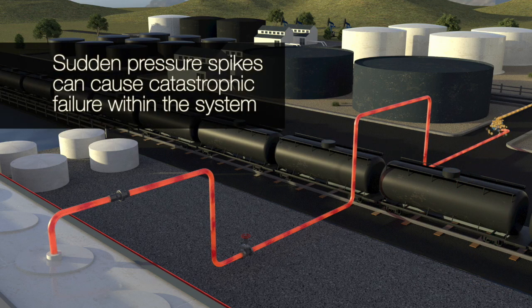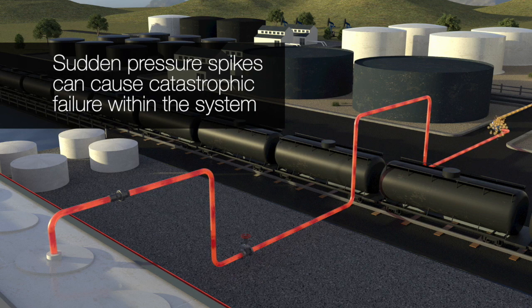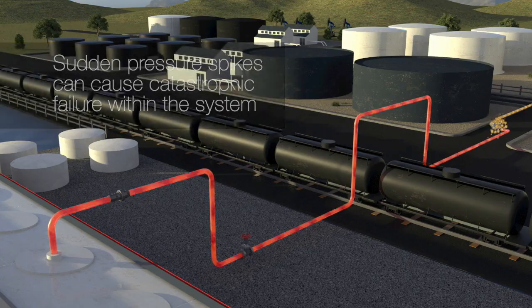The sudden pressure spike is enough to cause catastrophic failure at the pump or weak points within the piping system, such as elbows and various instrumentation.